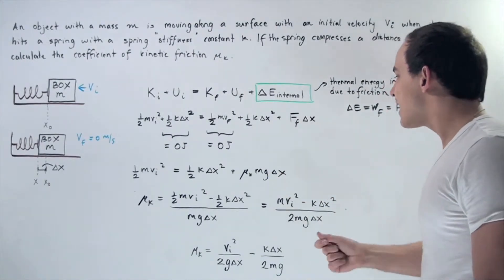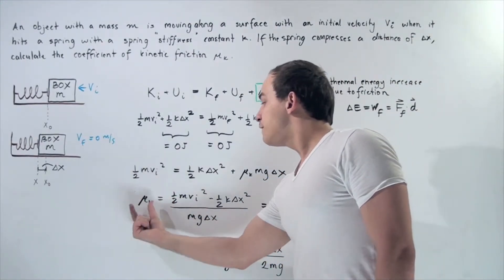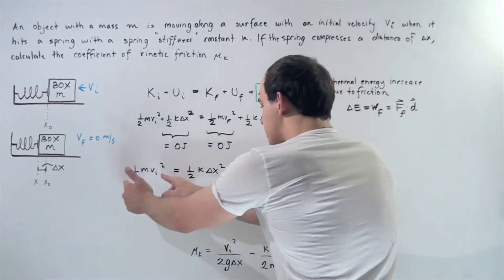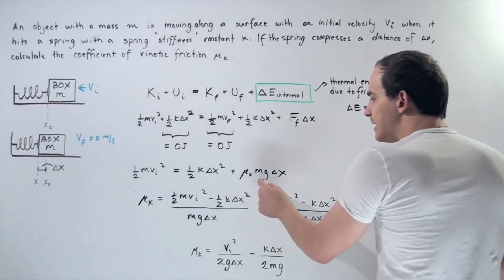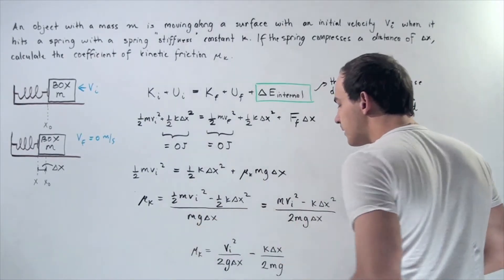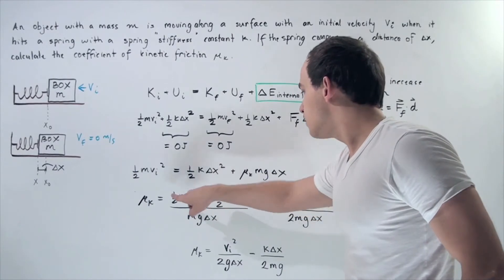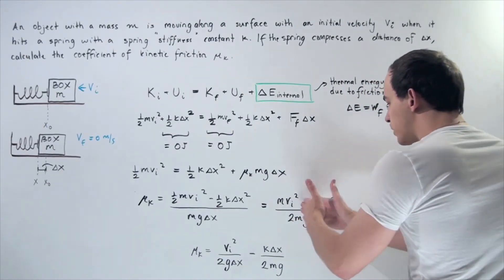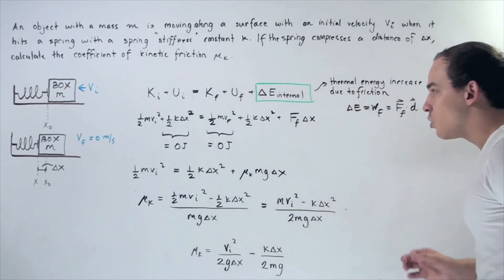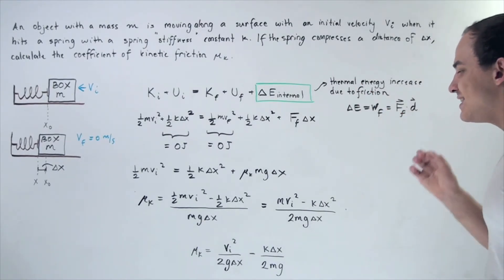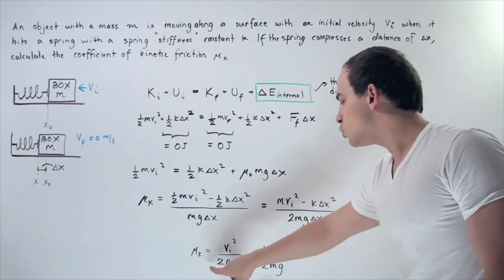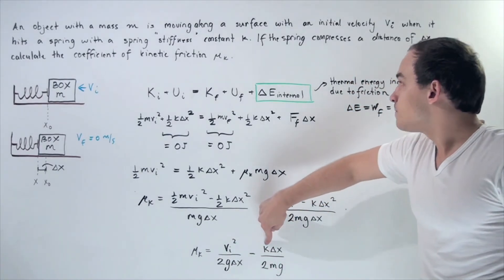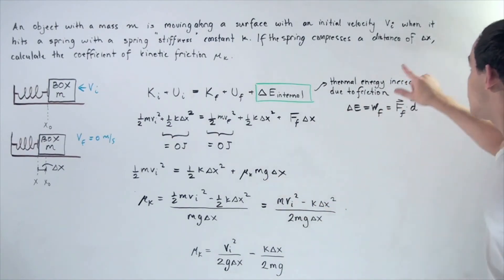Now we can rewrite and solve for mu_k. The coefficient of kinetic friction mu_k is equal to the initial kinetic energy term minus the elastic potential energy term, divided by mg multiplied by our displacement. Notice that the factor of one-half appears on both terms, so the two moves to the denominator. Dividing both sides gives us the final result: mu_k equals v_i squared divided by 2g times change in x, minus the spring constant k times change in x divided by 2mg.